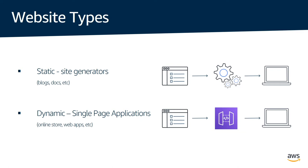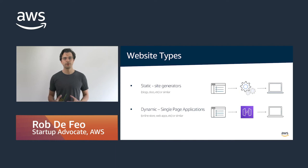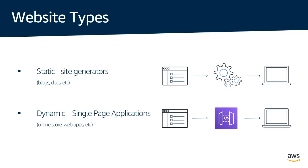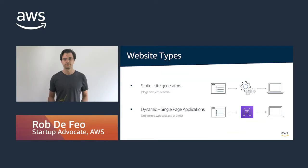Websites can be static or dynamic. The rough way I like to think about the difference is who makes the content on the page change. If the pages only change when the website owner updates a page or creates a new blog article, this means the website is static. If someone or something other than the website owner causes the contents of the page to change, then it's a dynamic site. This can be triggered by clicking on something or changing text or values, which then cause the page to change. Filling in a search form and getting different results is a common example we see and use every day.